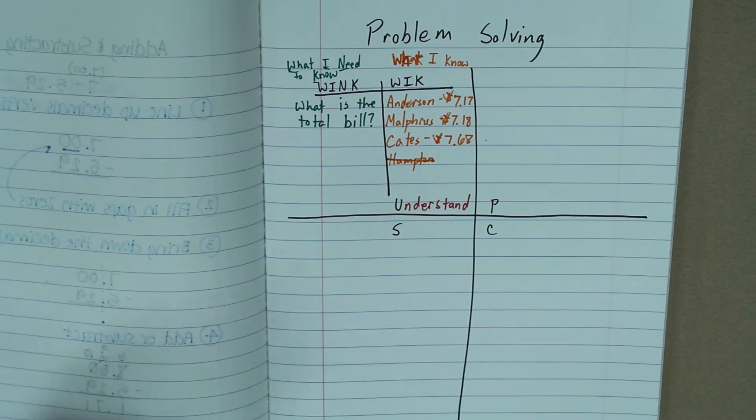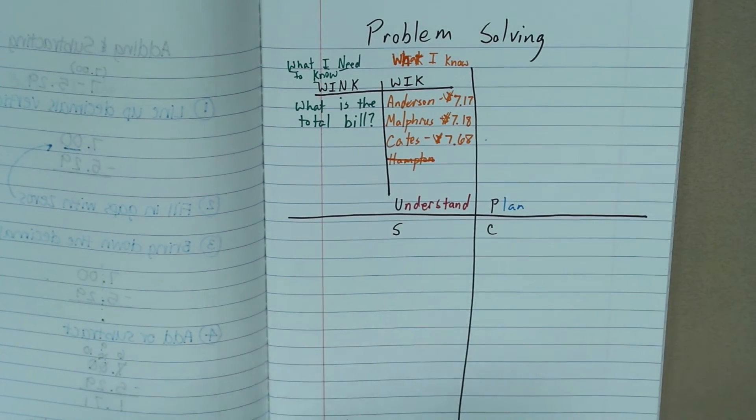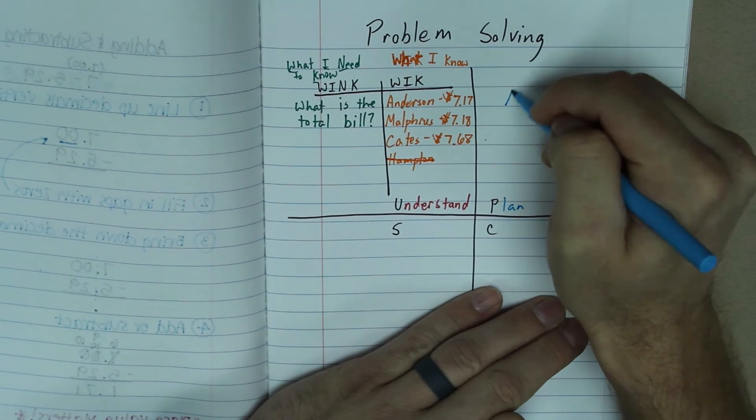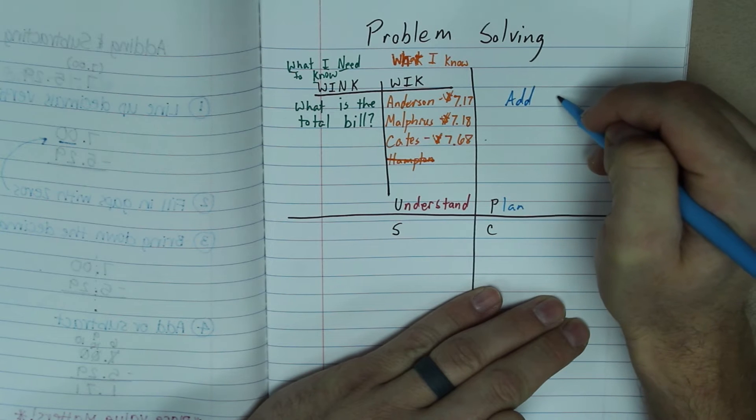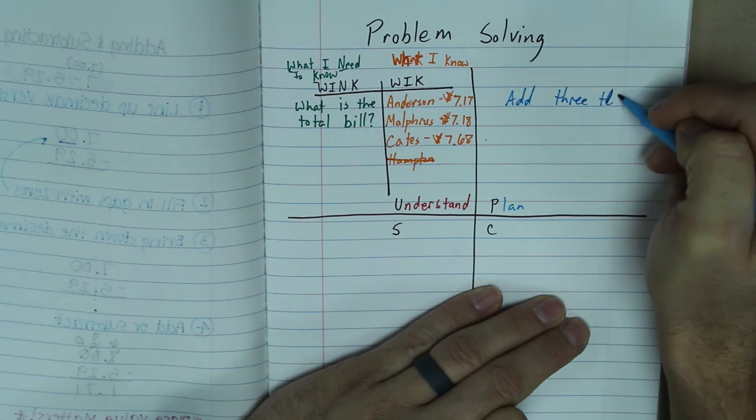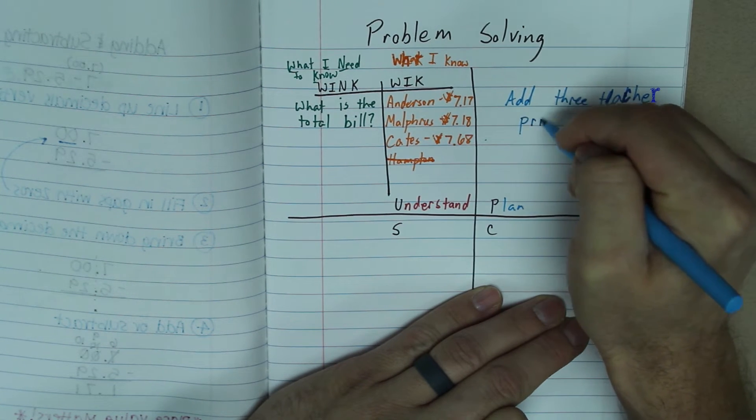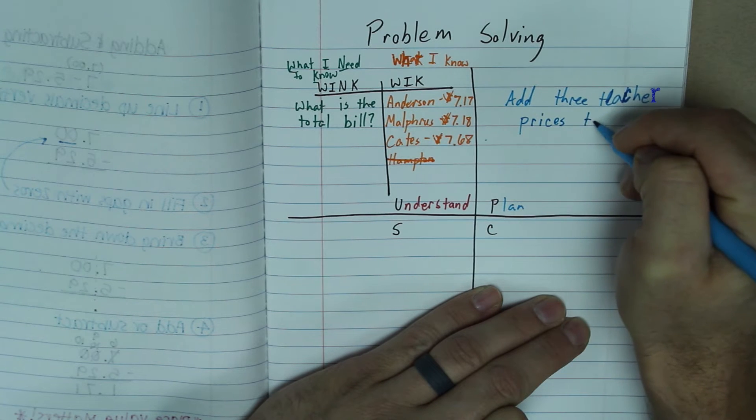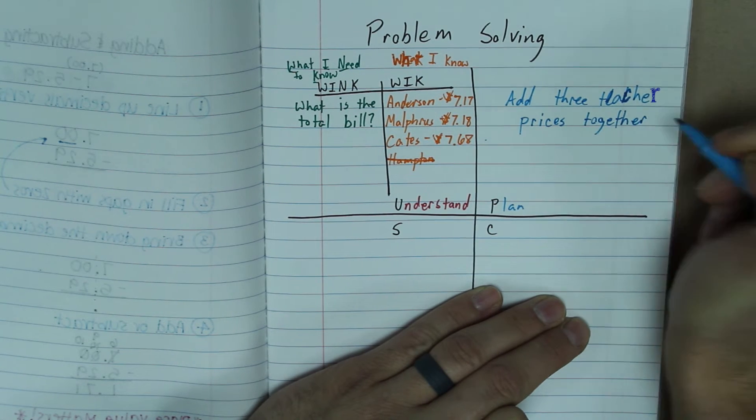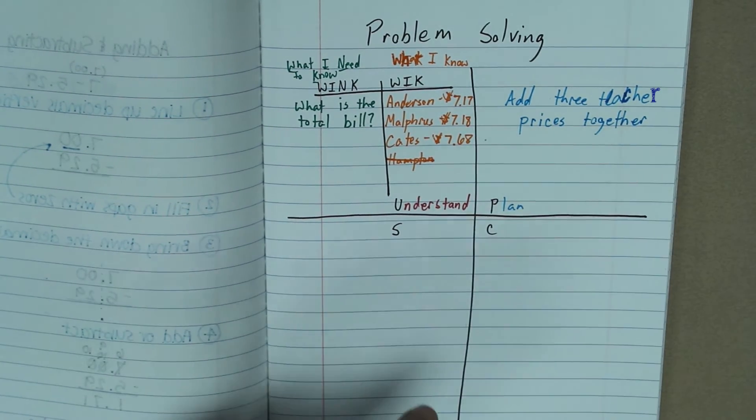So now we have our understand. So what is after understand? We need to plan. So what is going to be our plan? Well, I'm going to add three teacher prices together. So I'm going to add the three teacher prices together. So that is plan.